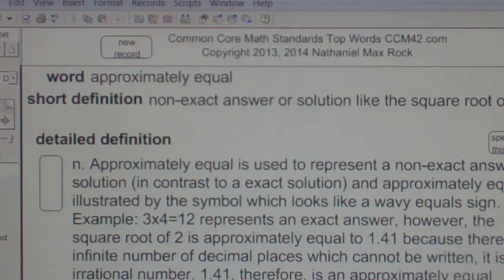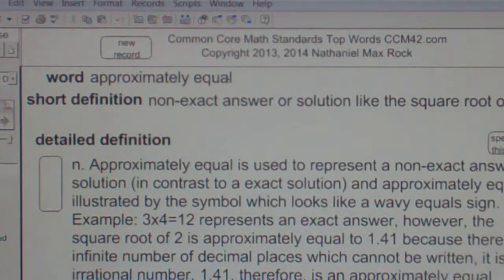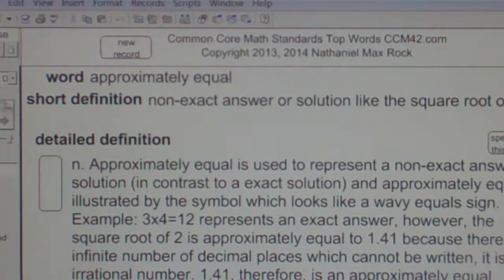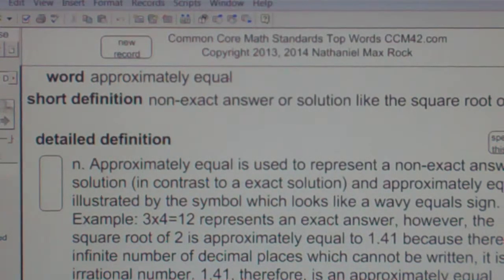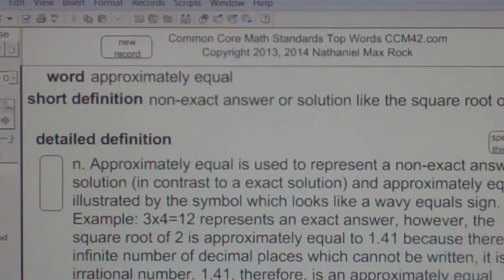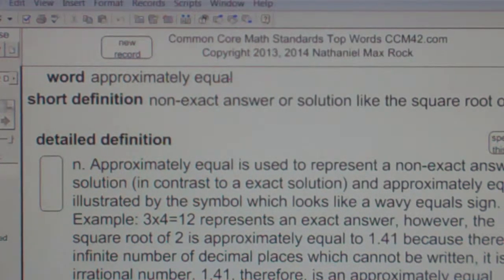Example: 3 times 4 is 12 represents an exact answer. However, the square root of 2 is approximately equal to 1.41 because there is an infinite number of decimal places which cannot be written—it is an irrational number. 1.41, therefore, is an approximately equal answer.